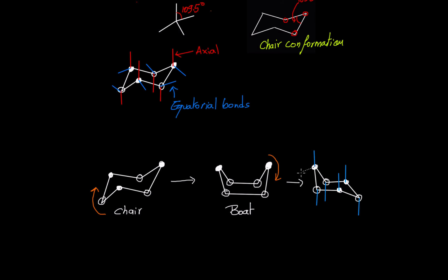We said they become equatorial, and therefore the red bonds are drawn on the equatorial side. So on an up carbon the equatorials are facing down, and on down carbons the equatorials are facing up. This is the second chair conformation — so if I call this one conformation one, this one is conformation two.